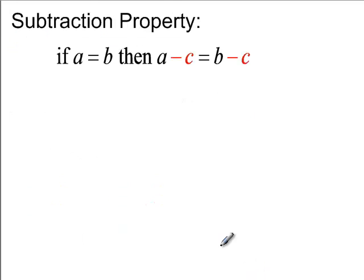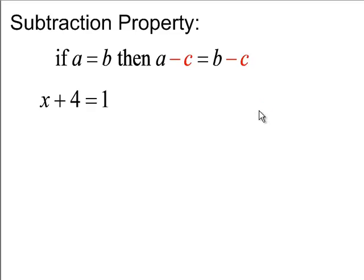Subtraction property. So if A equals B, then if you subtract the same thing from both sides of the equality, in this case C, then it still works. So if you have x plus 4 is equal to 1, and you subtract 4 from each side, since it's subtracted on both sides, then you're still maintaining your equality, and you're able to solve that x is equal to negative 3.